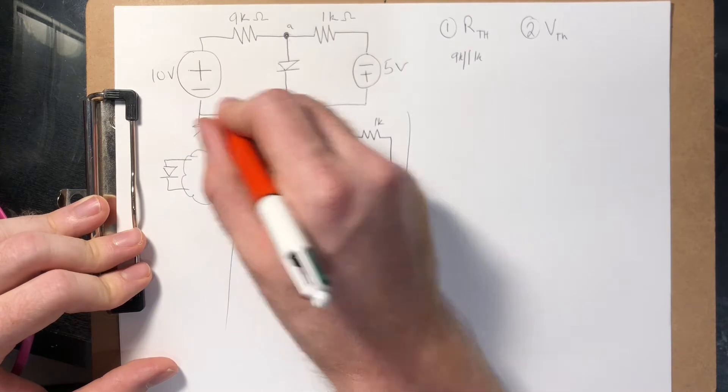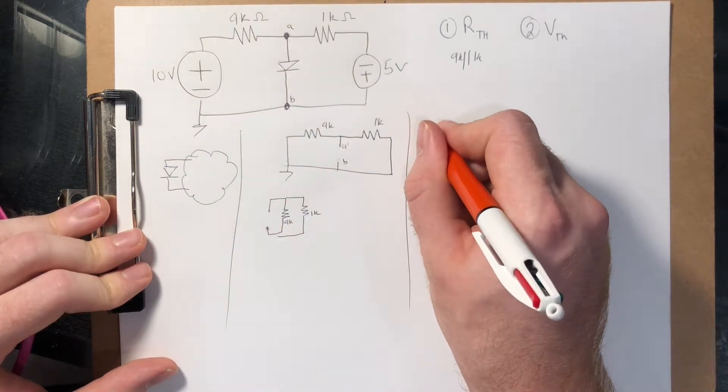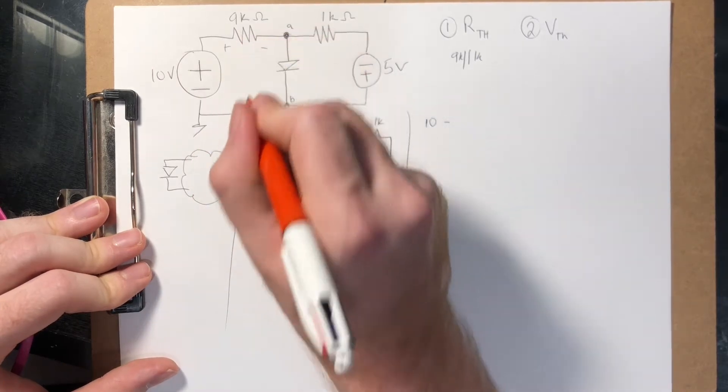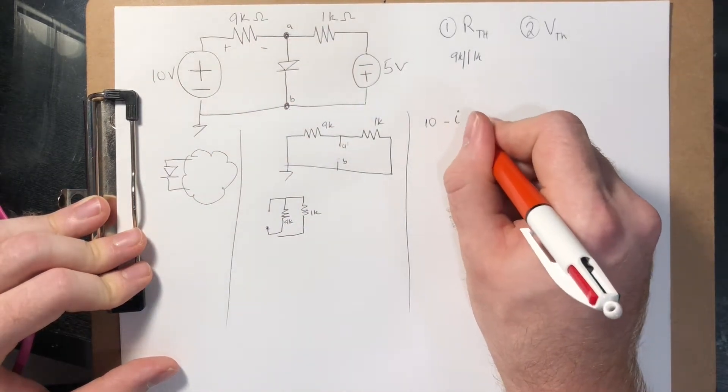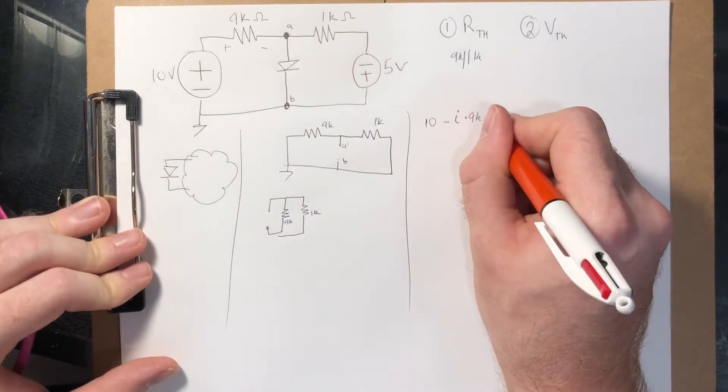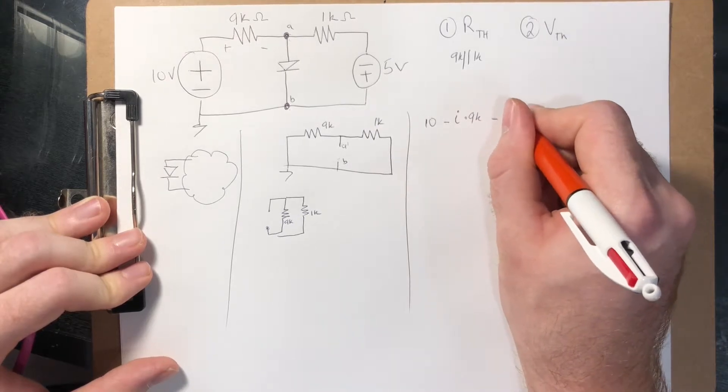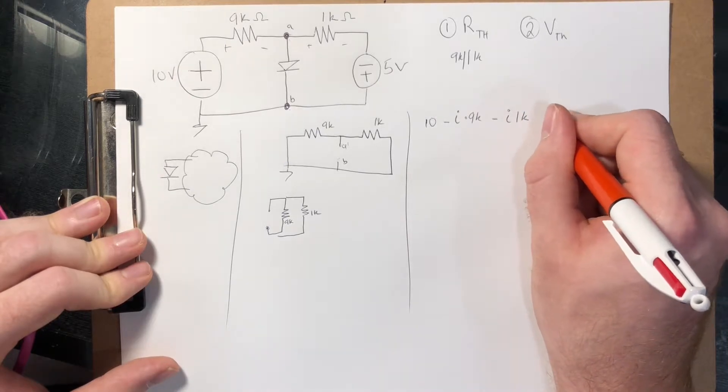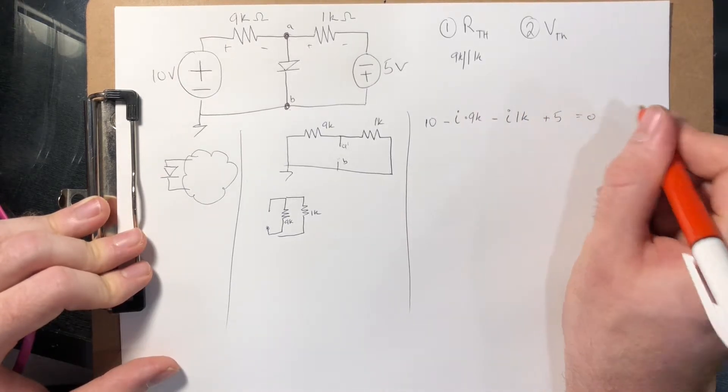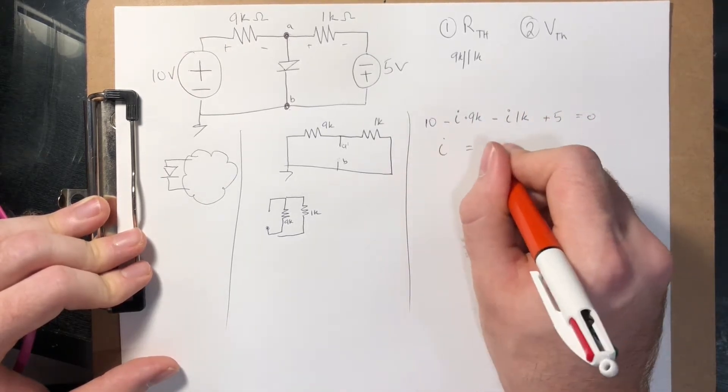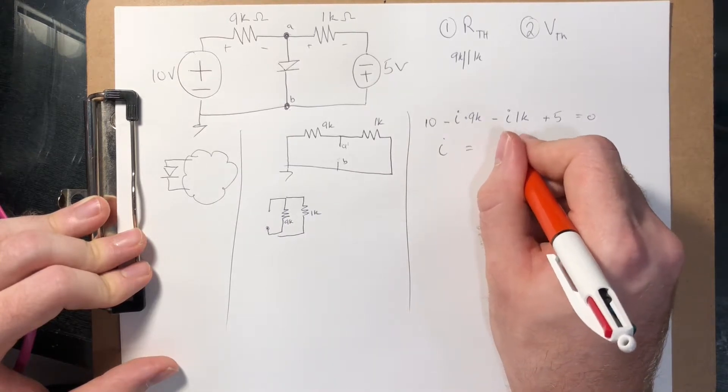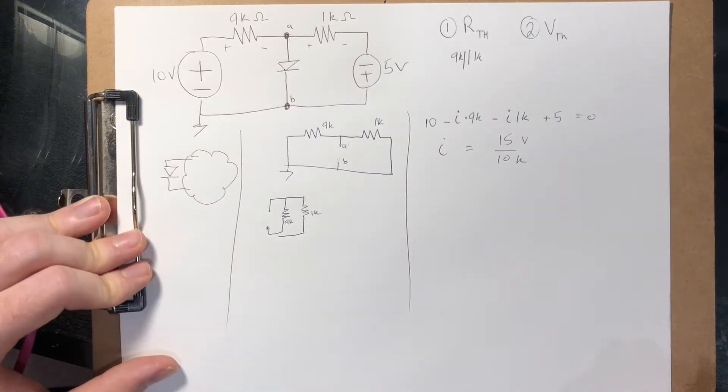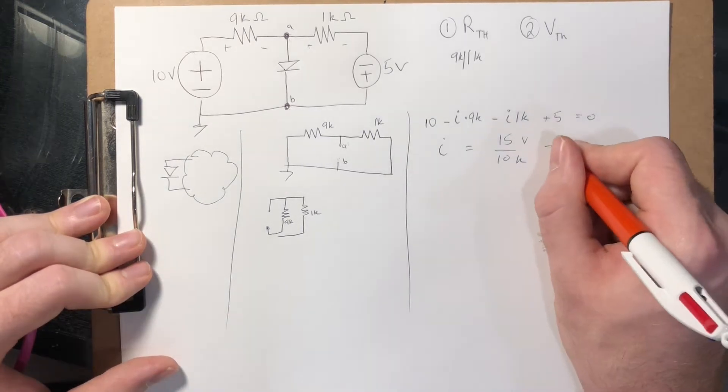So we're jumping up if we start here by 10. So 10 minus, if this is the plus terminal of that resistor there, I times 9k minus I, again, times 1k plus 5 equals 0. And then we know that I is 15 volts over 10k, which is just 1.5 milliamps.